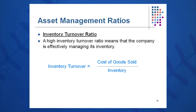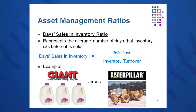Inventory turnover is cost of goods sold divided by inventory — how many times do we turn over that inventory? Faster is better. From that, we can calculate days sales in inventory: 365 divided by inventory turnover. In the milk business, two weeks of inventory sitting around is not good. For a large equipment manufacturer like Caterpillar, it's not as critical — selling 12 large units a year can be very successful. Turnover is clearly industry dependent.